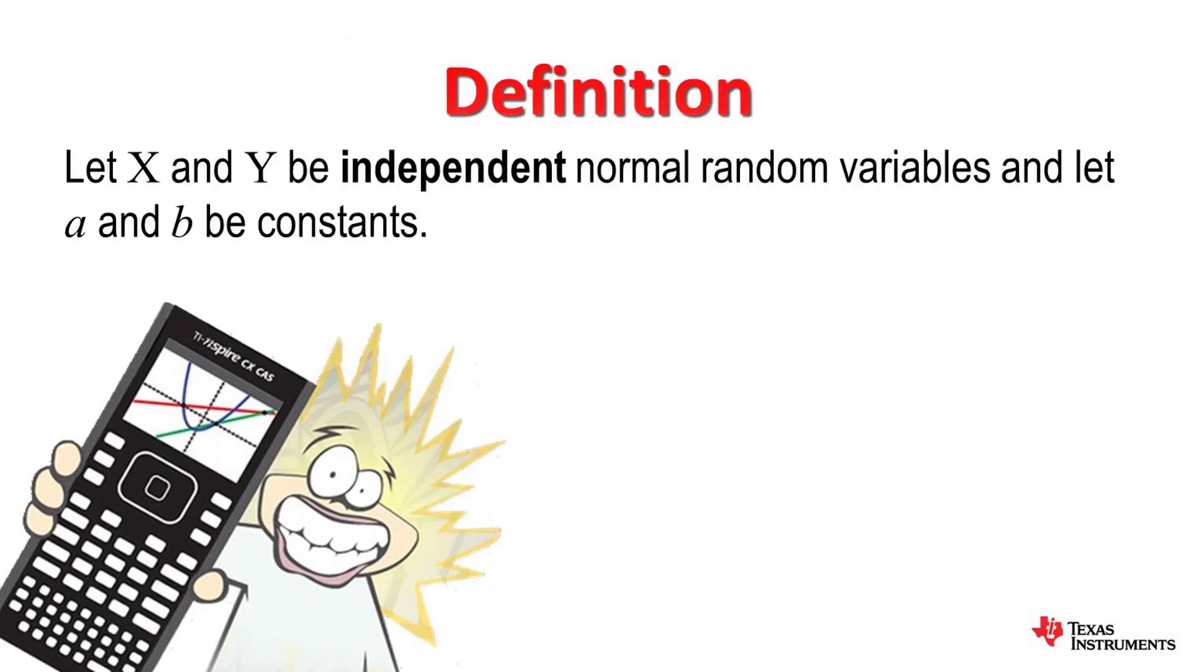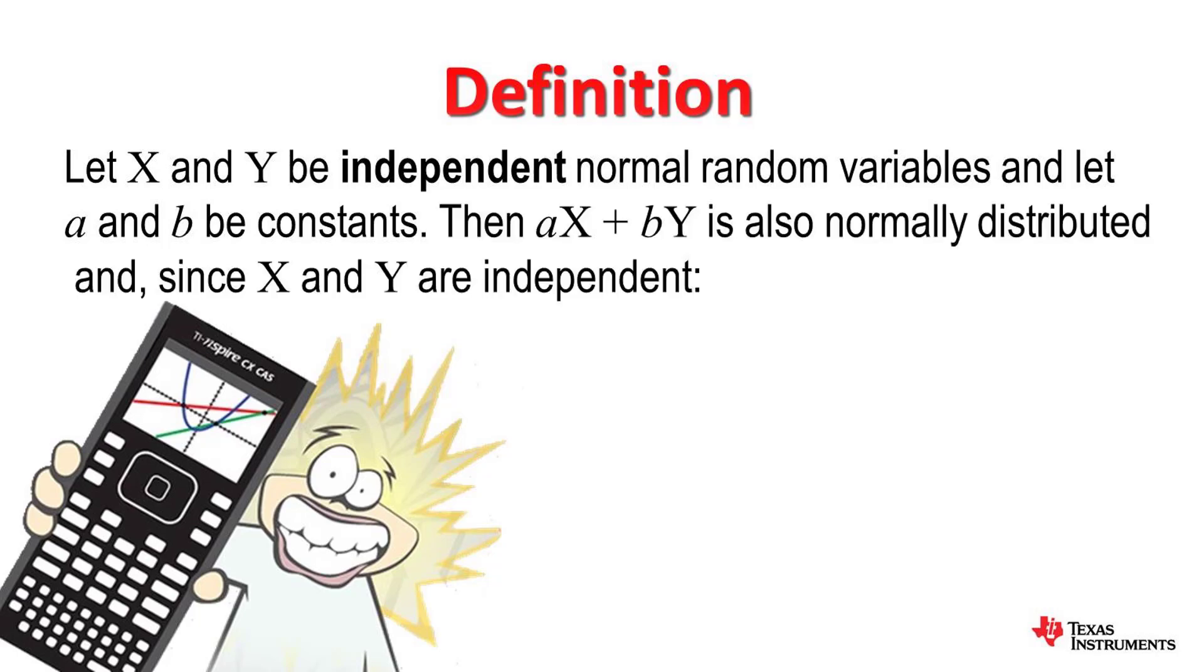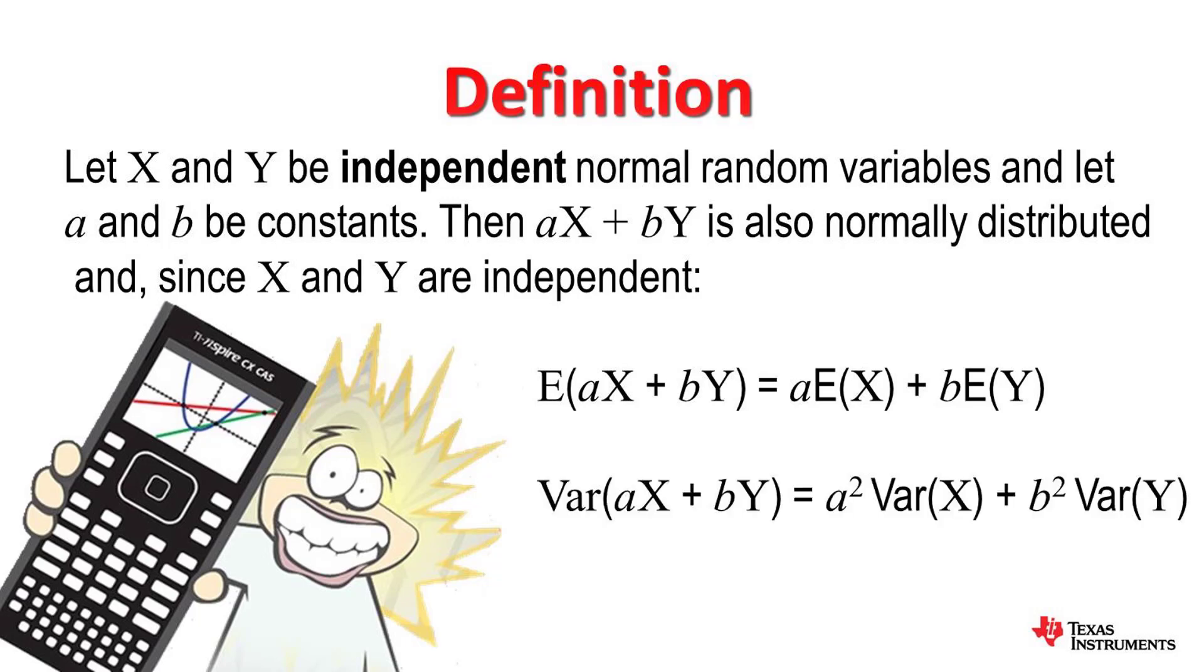First of all, a definition. If we let random variables x and y be independent normal random variables and a and b are constants, then the combined random variable ax plus by is also normally distributed. Since random variables x and y are independent, we can say that E of ax plus by is a E of x plus b E of y, and var of ax plus by is a squared var of x plus b squared var of y.